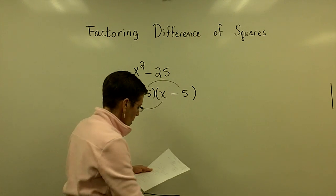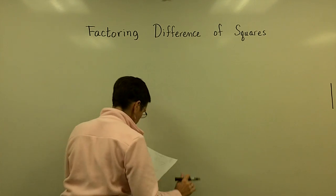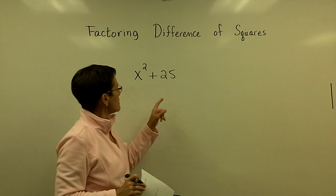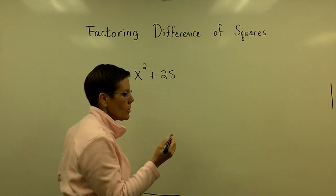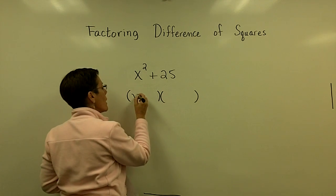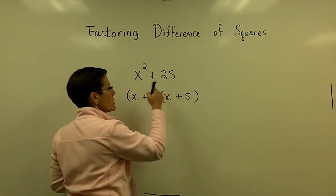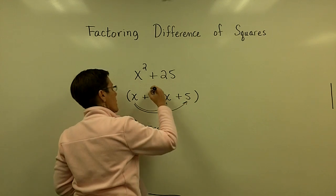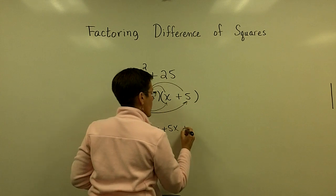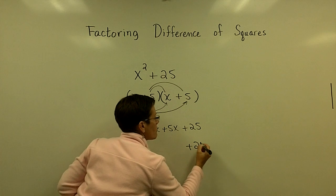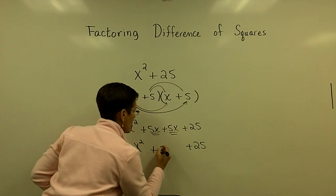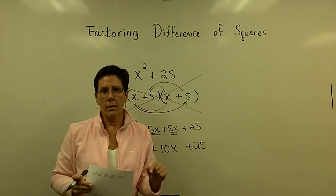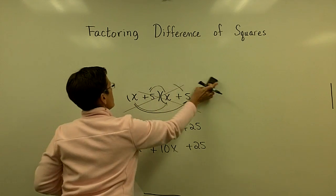If I threw a problem like x squared plus 25 at you, I hope you would say it can't be done — because it's not the difference of squares. Let me show you why. You might try putting a plus 5 and a plus 5 in the binomials since their product is positive 25. But when you FOIL it out, you get x squared plus 5x plus 5x plus 25 — that 5x and 5x adds to 10x. There is no way to factor x squared plus 25; it is not two terms with a minus sign between two perfect squares.